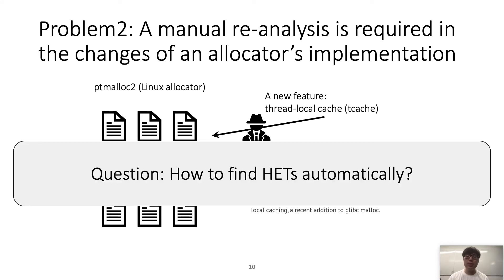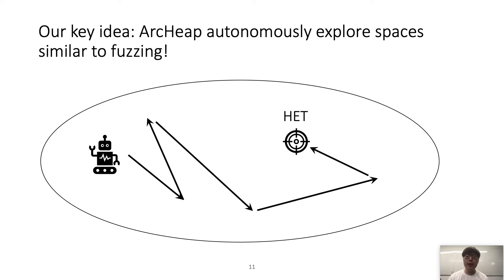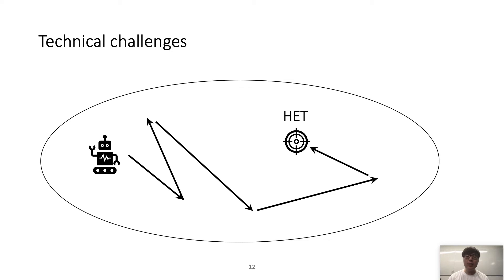Our research question is: how can we automate this task? Our key idea is to make machines autonomously explore spaces to find heap exploitation techniques, similar to fuzzing. Our tool, Rkip, keeps generating sets of heap actions and finally discovers a certain set of actions that can be used for exploitation — what we call a heap exploitation technique. However, this is not trivial. There are several technical challenges: first, the search space is very large; second, we need an efficient way to evaluate a heap exploitation technique.